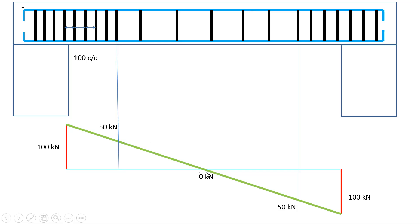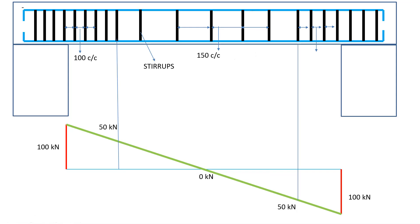Mathematically, at zero shear force you don't need any stirrups, but practically that is not possible because you need stirrups to hang the top and bottom rebars. So we increase the spacing rather than removing stirrups entirely. That is why in the drawings you see 150mm center to center at the center and 100mm center to center near the support. Another reason is ductile detailing from an earthquake point of view — the closely spaced zone near the support makes it more ductile.